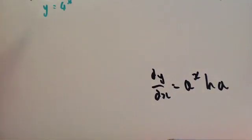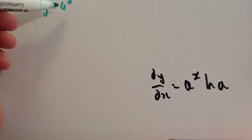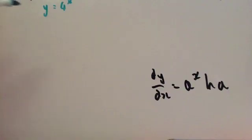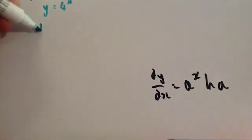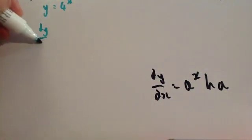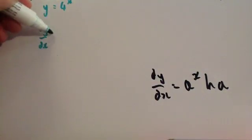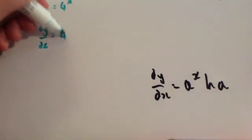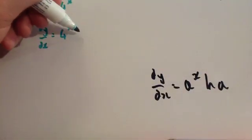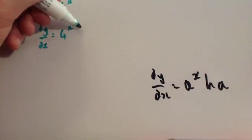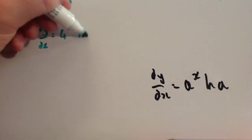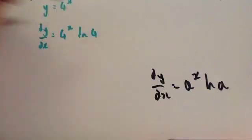So if we wanted to differentiate y equals 4 to the x, using the standard result, we get dy/dx equals 4 to the x times natural log of 4.